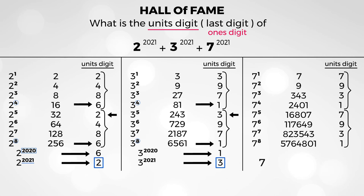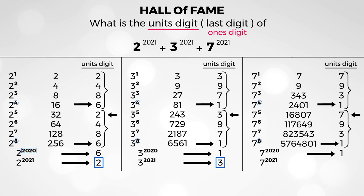For 7 to the power of 2,021: is 2,021 divisible by 4? Unfortunately, it is not. If it were, the units digit would be 1, since any multiple of 4 as the exponent gives a units digit of 1 — for example, exponents 4 and 8 both give units digit 1. But not to worry, because 2,020 is a multiple of 4, so 7 to the power of 2,020 has units digit 1. Therefore, the units digit of 7 to the power of 2,021 is the next one in the pattern, which is 7.